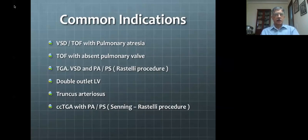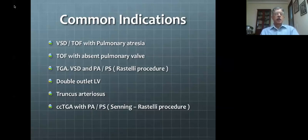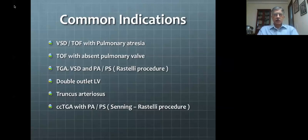Double outlet right or left ventricle has a similar situation. In truncus arteriosus, there is truly no connection between the right ventricle and pulmonary artery — the common arterial trunk is utilized for the systemic circulation, and a fresh connection must be established to the pulmonary artery. In patients with corrected transposition with pulmonary atresia or pulmonary stenosis, an extracardiac conduit becomes part of the Senning-Rastelli procedure, correcting atrioventricular discordance with the Senning procedure and ventricular arterial discordance with an intracardiac LV-to-aorta routing and an extracardiac RV-PA connection.